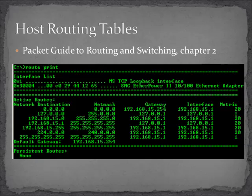Our first reminder is a host routing table. This is what you'll find on every single PC, Macintosh, or Linux box that's connected to a network. They all have to figure out how they're going to forward packets or frames to get to another node on the network or off of the network. If you want to know more about how this table is processed, go take a look at chapter 2 of the Packet Guide to Routing and Switching.